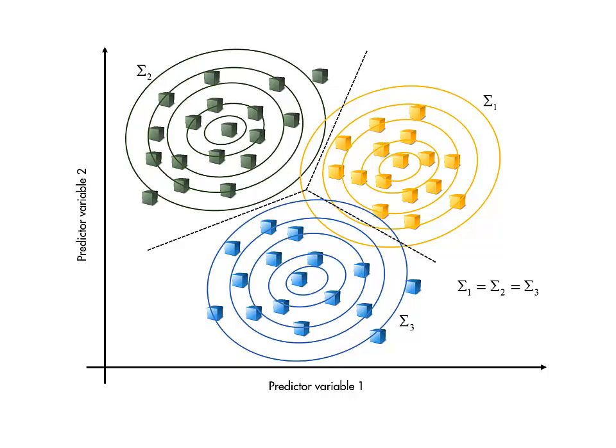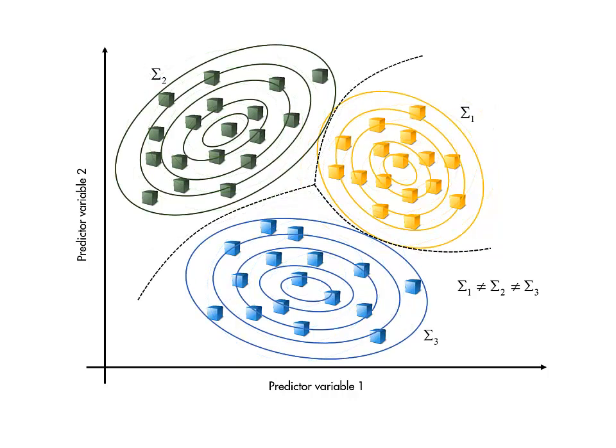However, linear boundaries are not appropriate for all problems. If we do not assume that the covariance matrices are the same for all classes, the boundaries turn out to be quadratic. And again, the coefficients are determined by the mean vectors and covariance matrices of the observed classes.